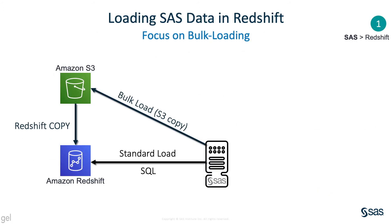Scenario number one: loading data into Redshift from SAS, with a focus on bulk loading. Redshift inserts are slow, so using bulk loading techniques is mandatory if we want acceptable performance. Instead of a standard load using SQL inserts, we choose to run a bulk load. Behind the scenes, a bulk load exports the SAS data as flat files, copies them to an S3 bucket, and runs a Redshift COPY statement — this is lightning fast in comparison with Redshift inserts.